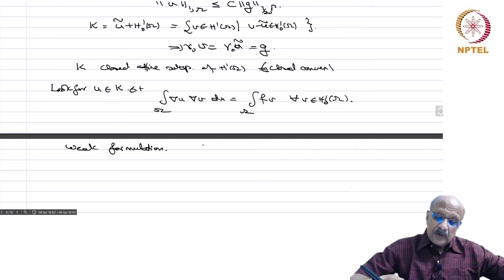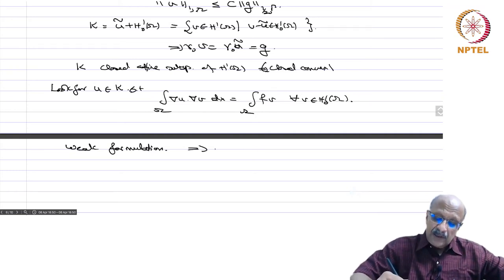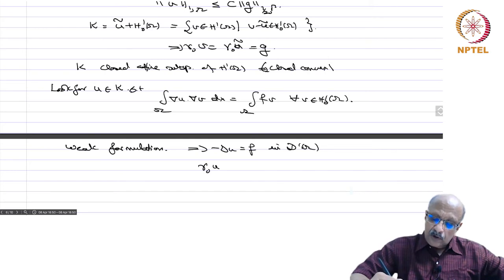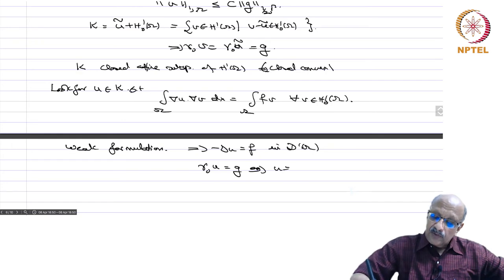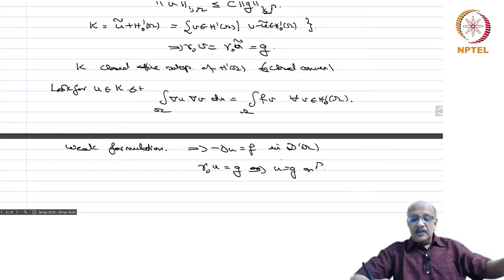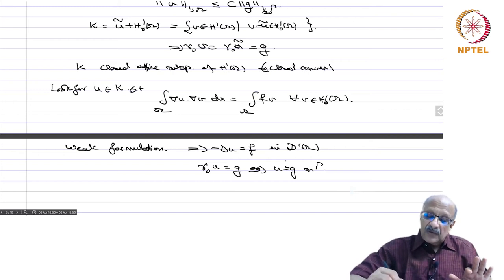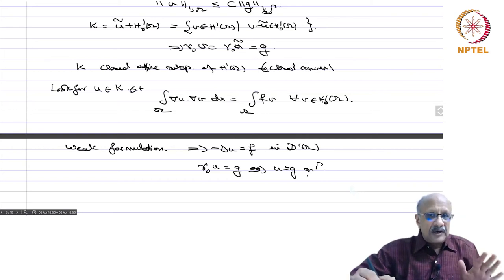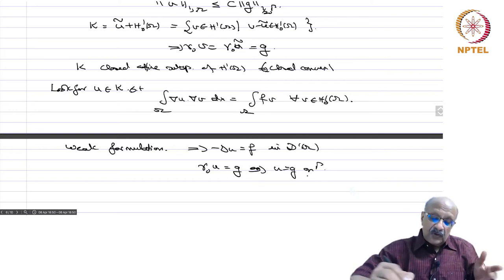As before, a weak solution obviously satisfies minus Laplacian u equals f in D'(omega), and since gamma_0(u) equals g, u satisfies the boundary condition. So the weak solution satisfies the differential equation in the sense of distributions and also satisfies the boundary condition. This is the weak formulation of the inhomogeneous equation.